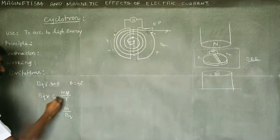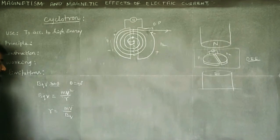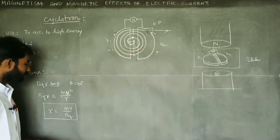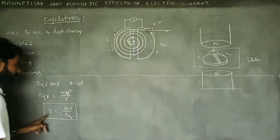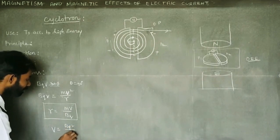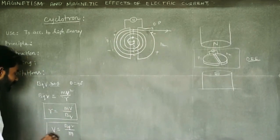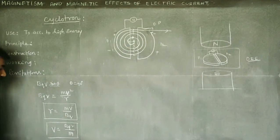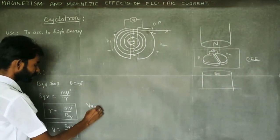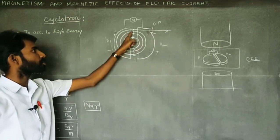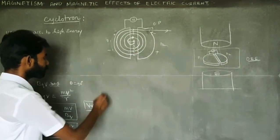We can write: mv²/r equals the centripetal force. So V equals Bqr/m. That V is V — m by Bq is there. As the radius increases, the velocity increases. V is proportional to the radius. If the radius increases, the velocity increases. In this direction, as we accelerate, the radius increases.